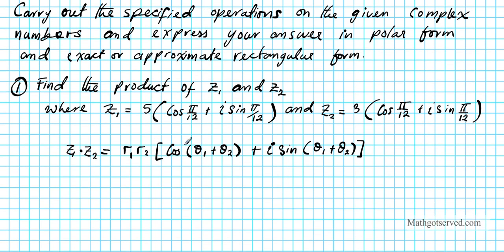We're going to apply that to this problem. We can clearly see that this is r1 and this is theta1. The angles are always the same — the theta is always the same. And this is r2, the radius of the second complex number in polar form. And this is theta2. So to find the product z1 times z2, all we simply do is multiply the radii and then find the sum of the angles.